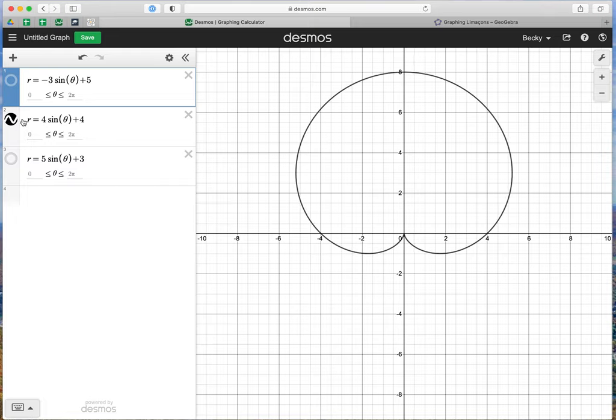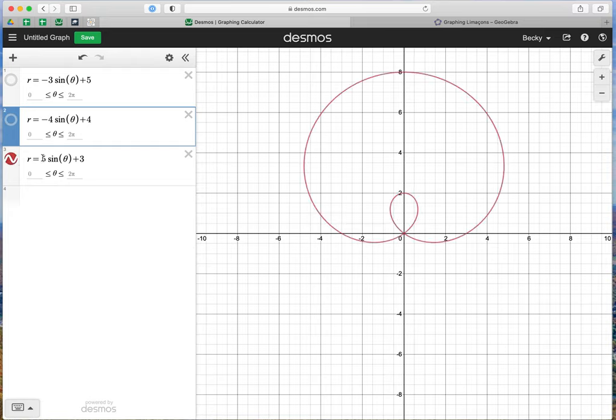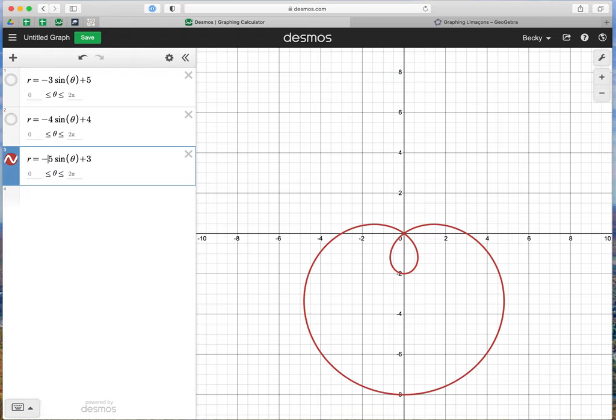Let's do the same thing for 4 sine theta plus 4, that's our nice cardioid. If I put negative 4, it's going to flip so the majority is down. And let's do the last one. Let's show 5 sine theta plus 3, that loop Limasson, let's make it negative 5 sine theta plus 3, and it will also flip over the x-axis.